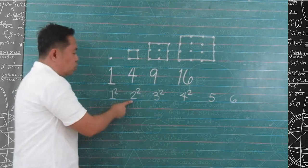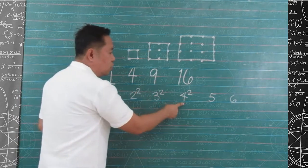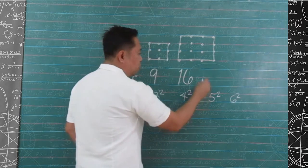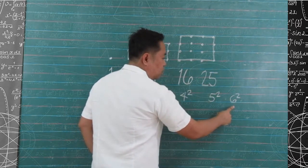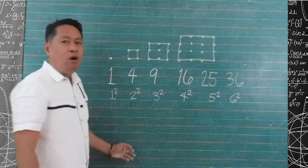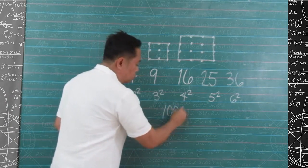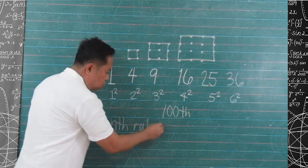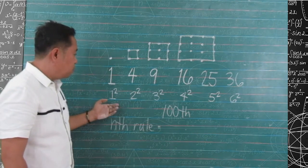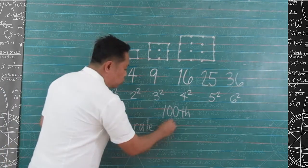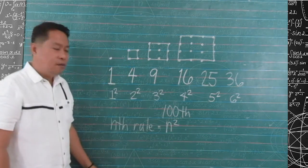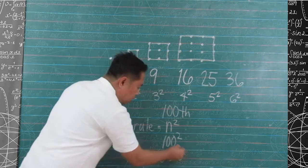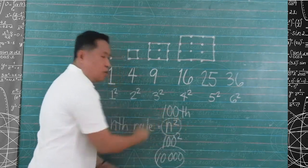1 times 1 is 1. 2 times 2 is 4. 3 times 3 is 9. And 4 times 4 is 16. So, to get our 5th and 6th terms, we have to multiply 5 by itself, which is 25, and 6 multiplied by itself is 36. If we are looking for the 100th term, we use the rule n squared. So, 100 times itself equals 10,000. Our 100th term is 10,000 and n squared is our rule.